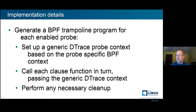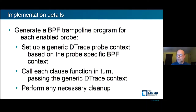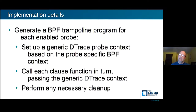We generate a BPF trampoline program specific to a certain program type, accepting a specific BPF context for that type. It sets up the generic probe context based on that information — doing the work that providers used to do — and then calls each clause function in turn, passing in that generic context. This is where we move from doing things the BPF way to doing things the DTrace way. Every clause function is written as if it is the only clause function: it gets the probe context, runs, and at the end we should be back in the same state, except for data written to a buffer.